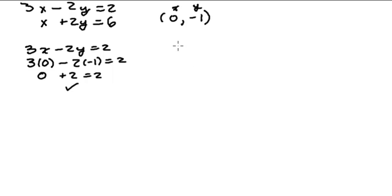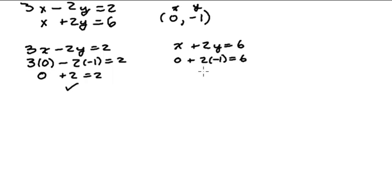Now let's check the second equation: x plus 2y equals 6. Plugging in 0 for x and negative 1 for y gives us negative 2 equals 6, which does not check out. So (0, negative 1) is not a solution to this system of equations.